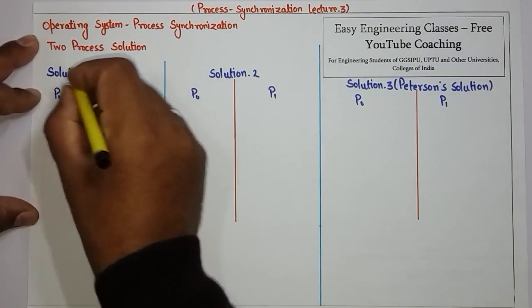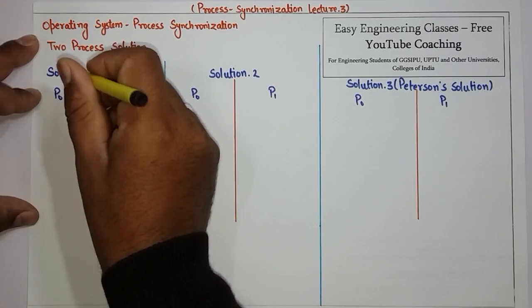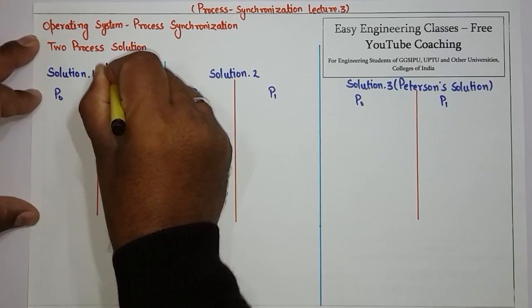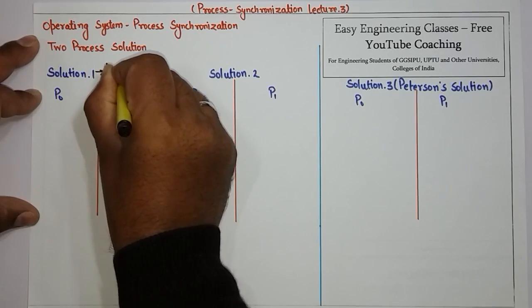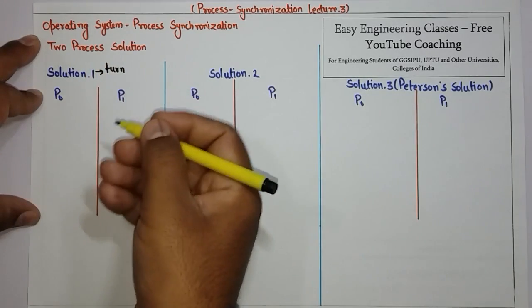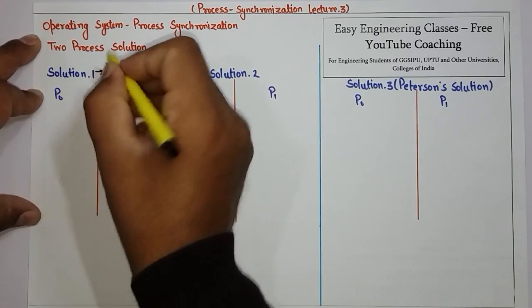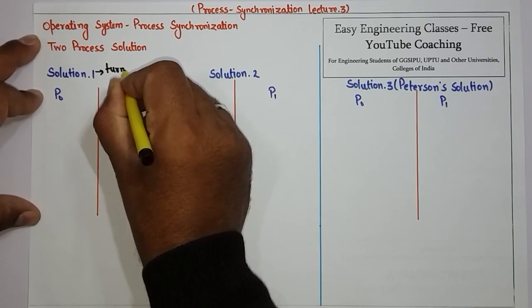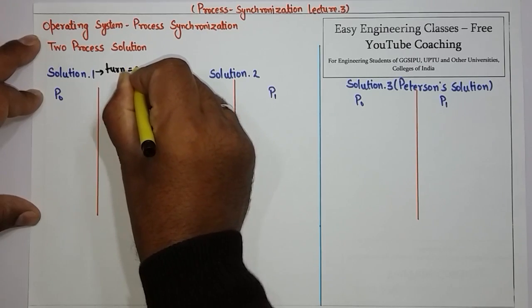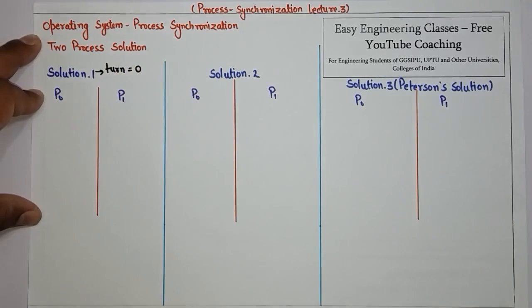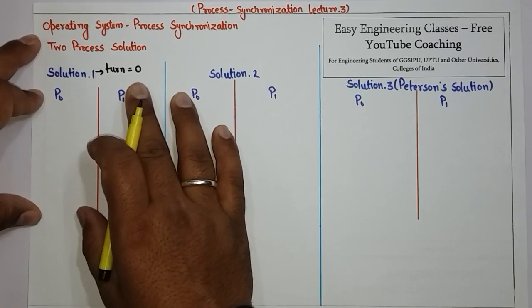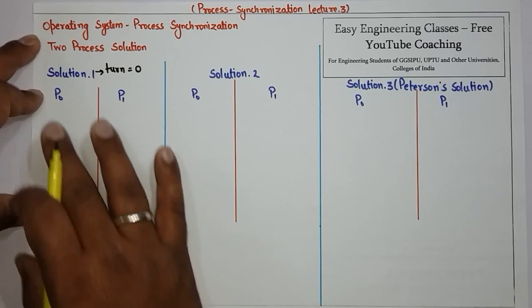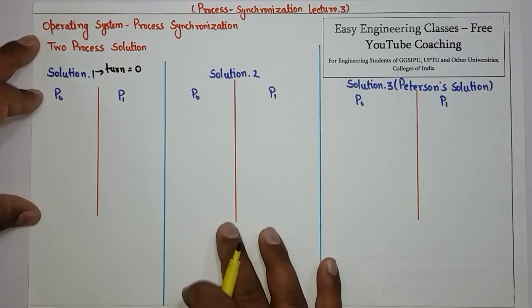The first solution uses a variable named 'turn'. For simplification, the initial value of turn is set to zero. When turn is equal to zero, it means process P0 can access the critical section.